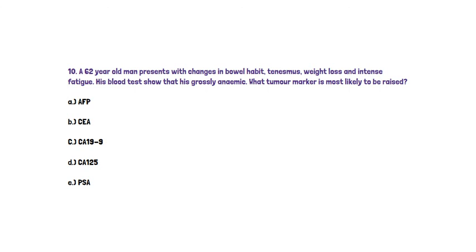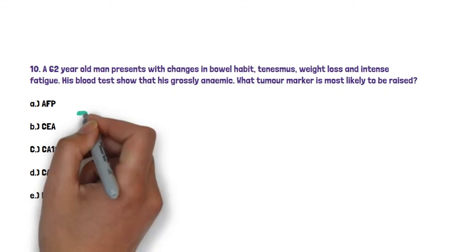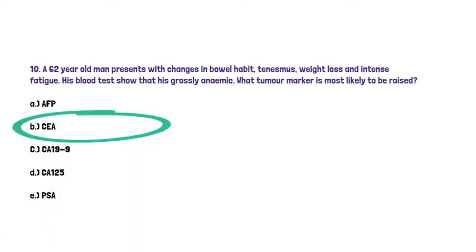The answer here is B. CEA. We're thinking of colon cancer. Alpha-fetoprotein (AFP) in option A is used for seminomas and liver tumours. CEA, the correct answer, is used for colon cancer. CA19-9 is used in pancreatic cancer. CA125 is used for ovarian cancer. And PSA is used in prostate cancer.